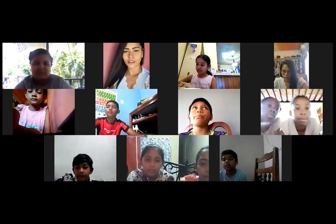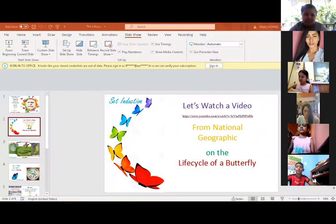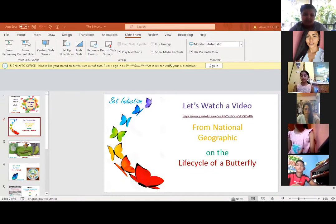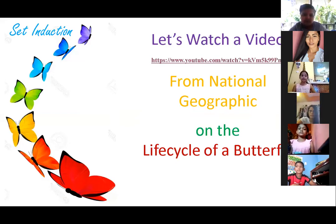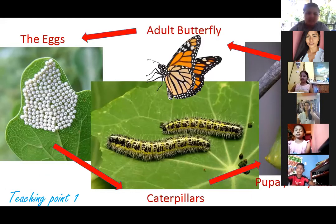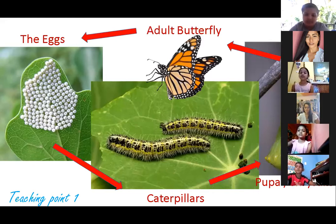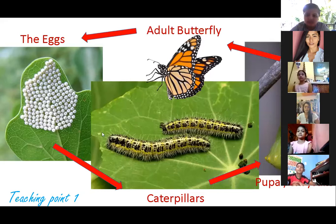Let me share my screen. So we watched the video — we have the pupa, the caterpillar, the eggs, the adult butterfly. And of course this is a big circle; everything happens in a cycle.